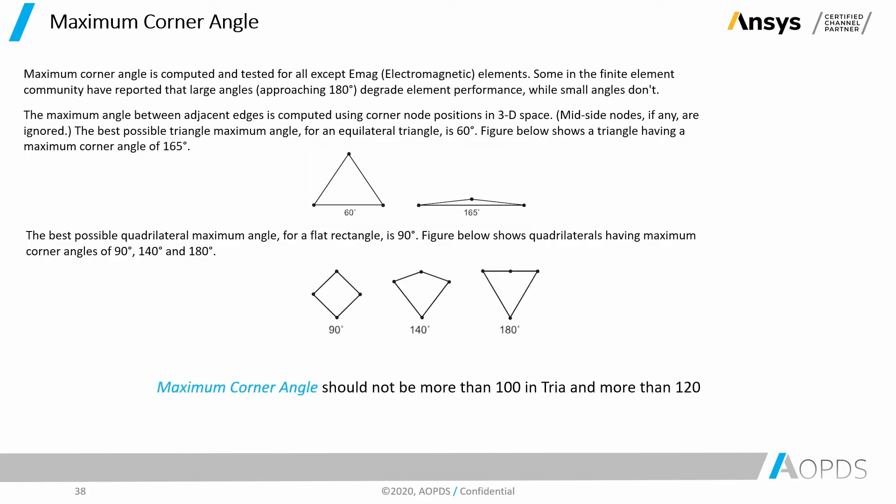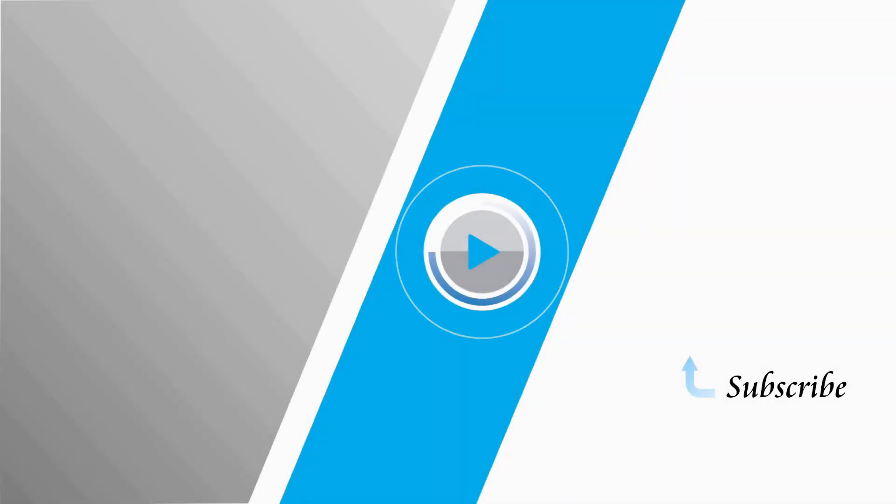As a rule of thumb, we suggest not to keep maximum corner angle more than 100 in triangles and more than 120 in quads.